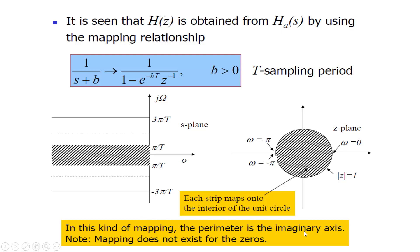In this kind of mapping the perimeter is the imaginary axis, and mapping does not exist for the zeros — that is another drawback of the impulse invariant technique. For example, for an analog filter 1/(s+b), the transformation in the impulse invariant technique gives 1/(1 - e^(-bT) * z^(-1)) for b > 0. In this kind of mapping, we are not able to map the zeros either.